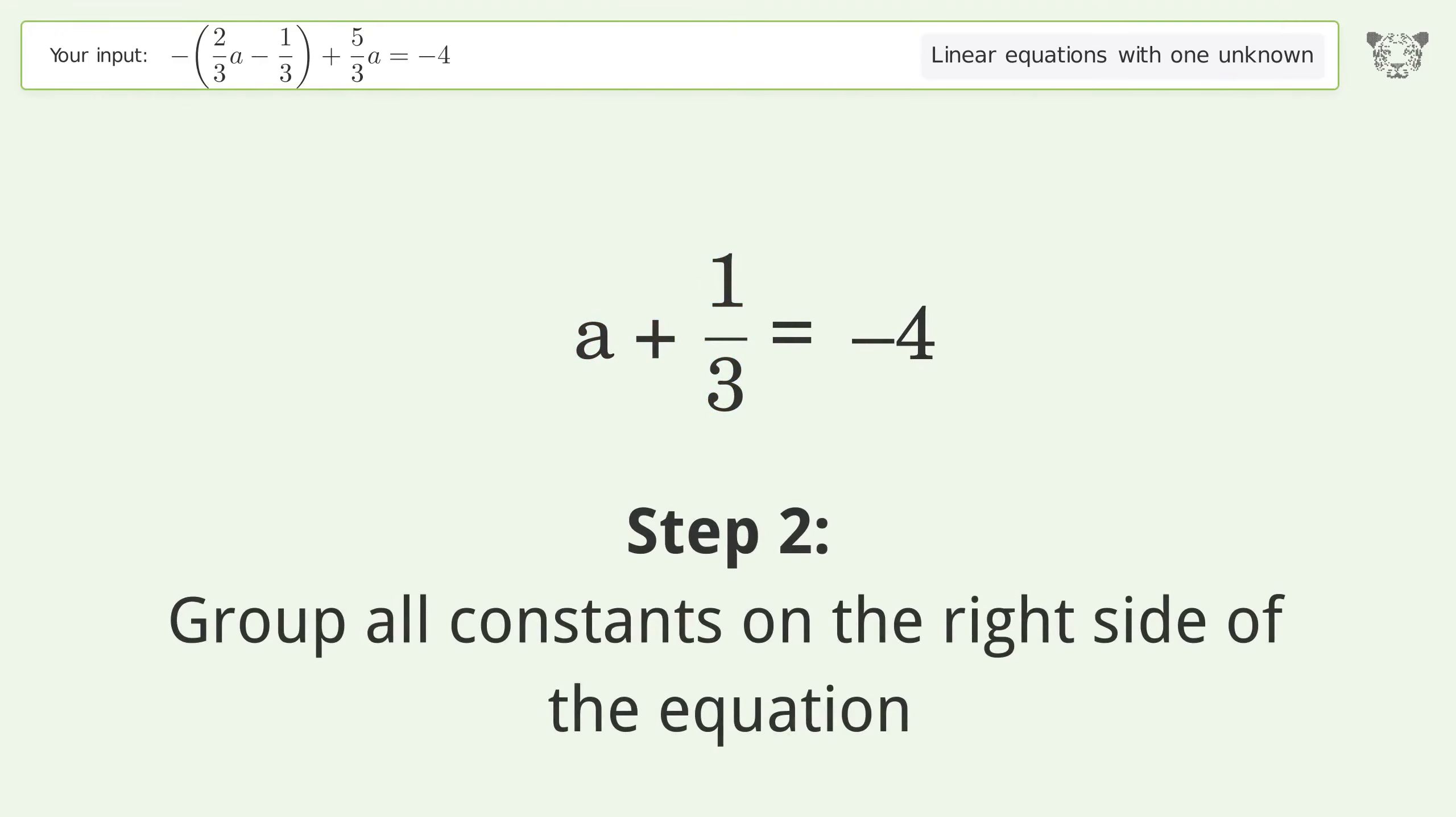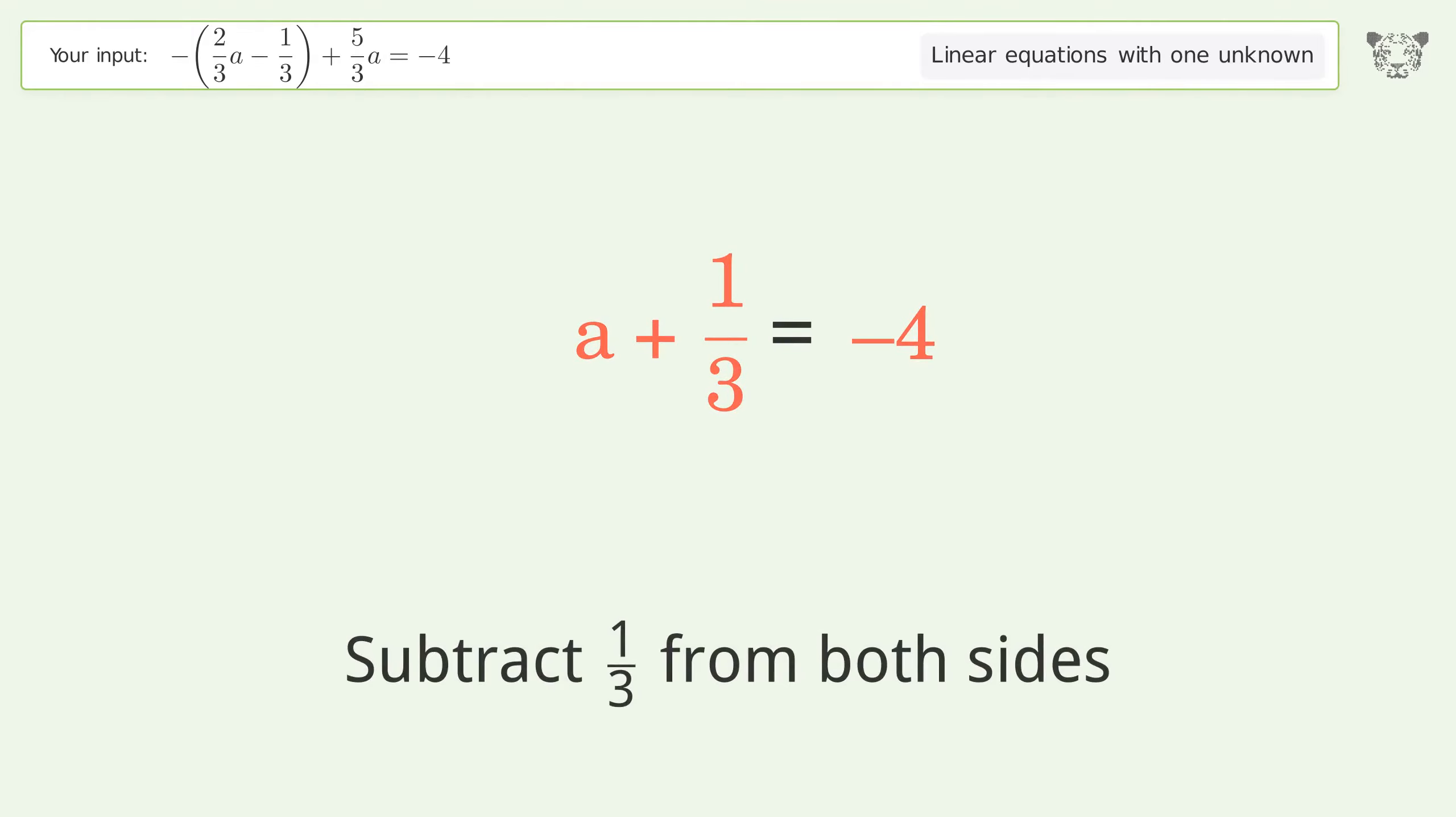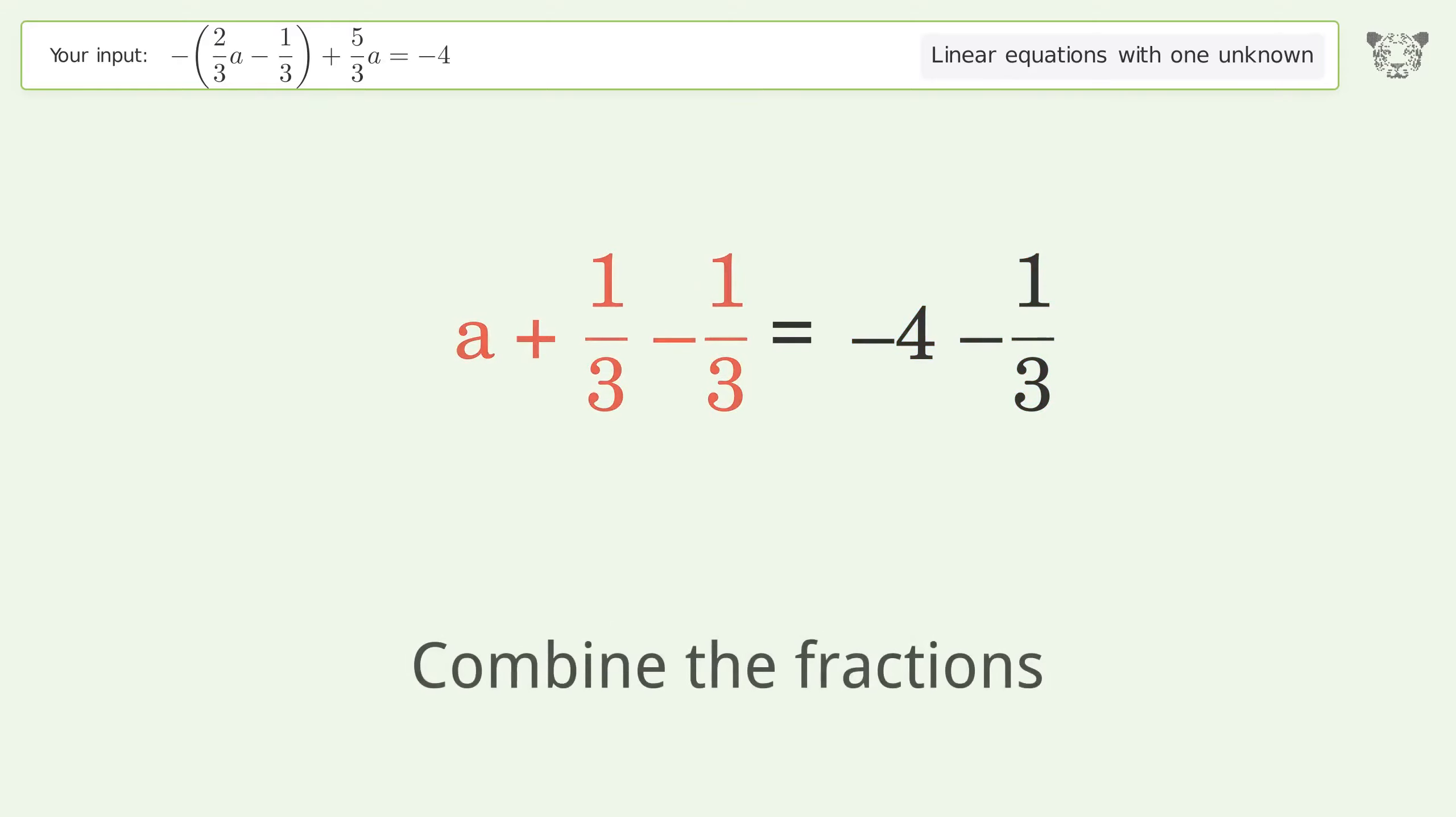Group all constants on the right side of the equation. Subtract 1 over 3 from both sides. Combine the fractions.